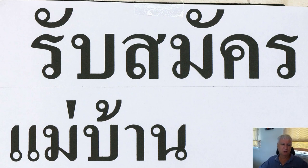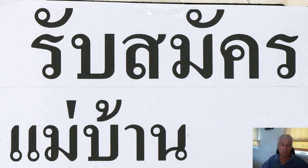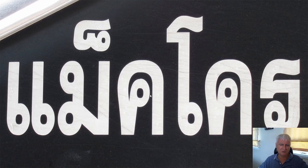This is another real-world sign featuring one of the example words. The top word says 'rap samat' meaning hiring — when a company is looking for staff — and underneath they list the people they want. The word we saw in the examples: Sara Air and Mo Ma M initial consonant with a falling tone mark gives 'may,' meaning mother. The next word has Bo Baimai B initial consonant, the long Sara Ah vowel, and No Nu final consonant — 'ban may,' meaning housekeeper, which is the Thai term for maid.